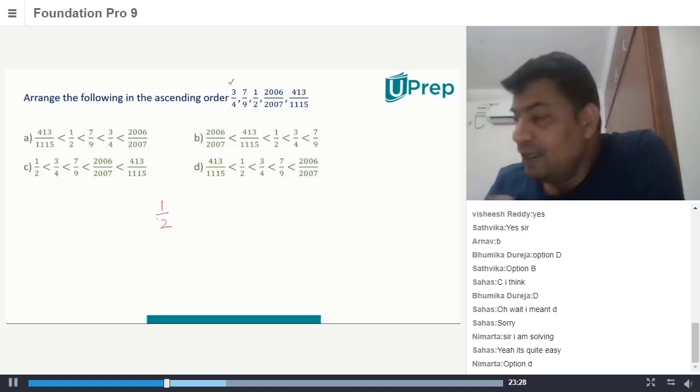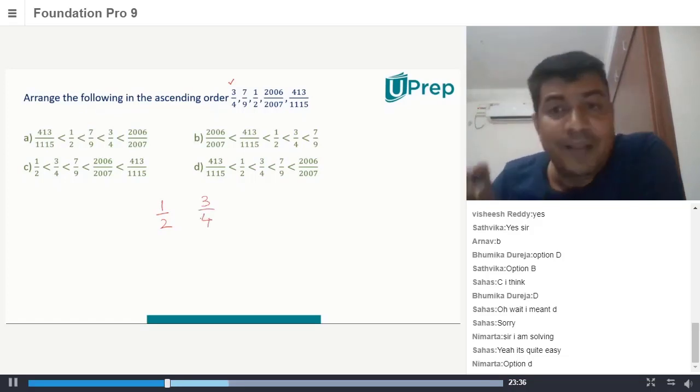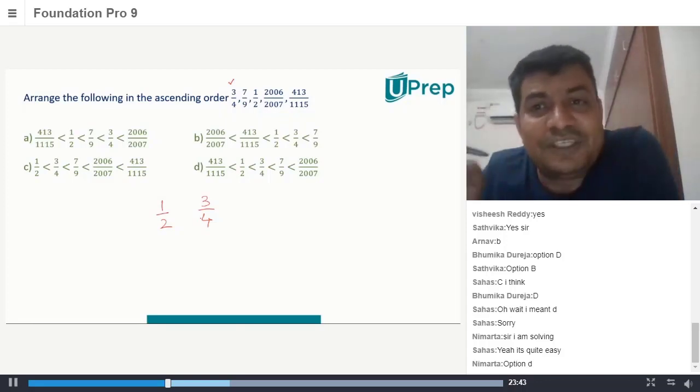Right, and now one way is here. We know 3/4 will be more than that which is here. I don't know, there might be other numbers coming in between, but I know for sure that 1/2 is on the left hand side, 3/4 is on the right hand side because 3/4 is greater.